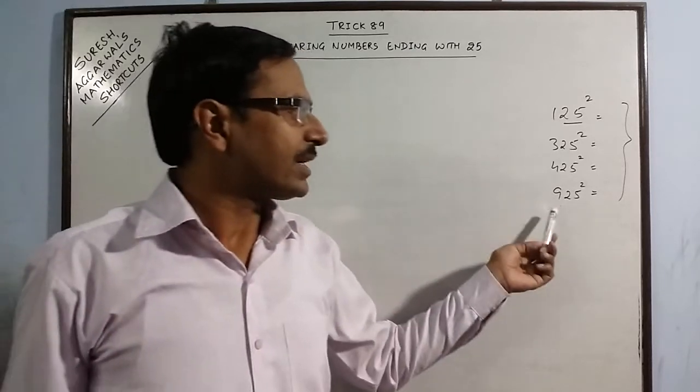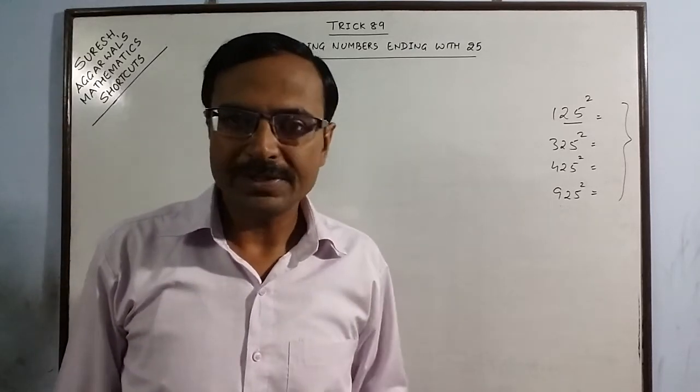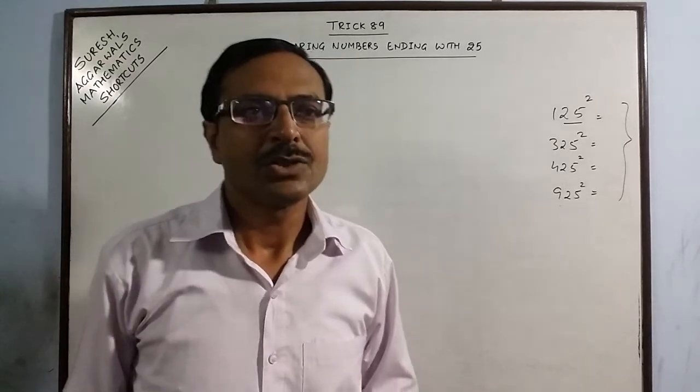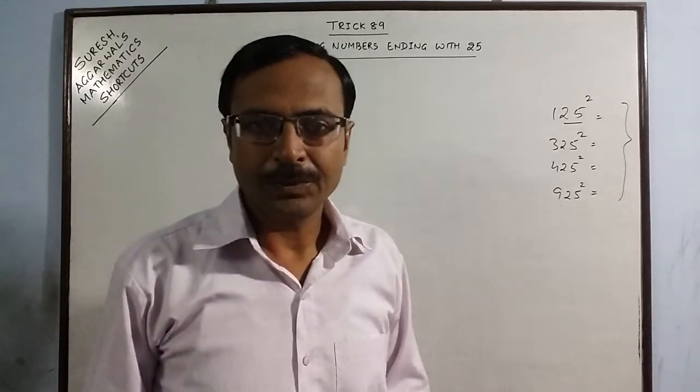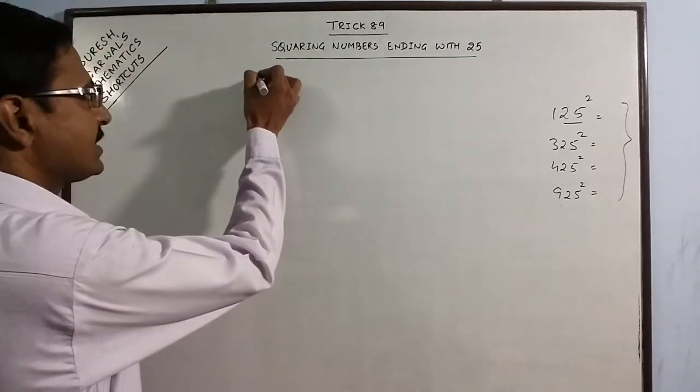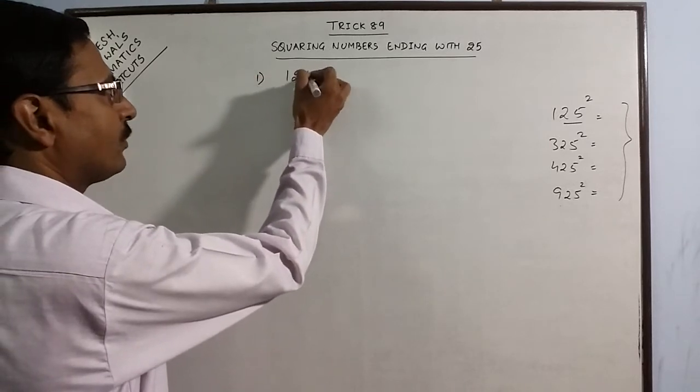Yes, in 4 to 5 seconds you can find the square of all numbers ending with 25. So let us understand this method. We will take the first example of the basic number 125.